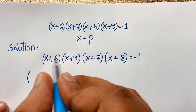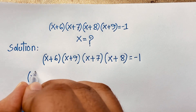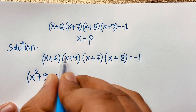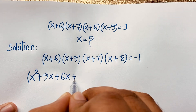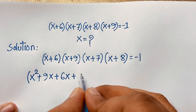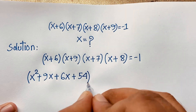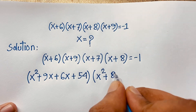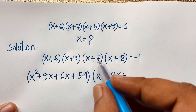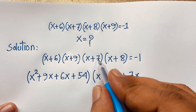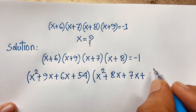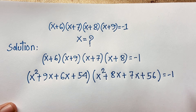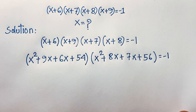Expanding (x + 6)(x + 9): x² + 9x + 6x + 54 = x² + 15x + 54. Expanding (x + 7)(x + 8): x² + 8x + 7x + 56 = x² + 15x + 56. Then we set this equal to -1.